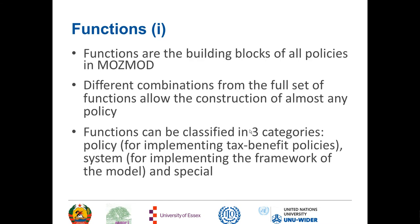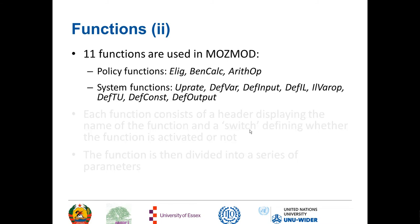Functions can be classified into three categories: policy functions for implementing tax benefit policies, system functions for implementing the basic framework of the model, and special functions, which are not used in MosMod. In MosMod there are only 11 functions: three policy functions — Elig, BenCalc, Arithop — and eight system functions: uprate, devvar, devinput, devil, ilvarop, devtu, devconst, and devoutput. I'll be explaining all of these as we go through the sessions.